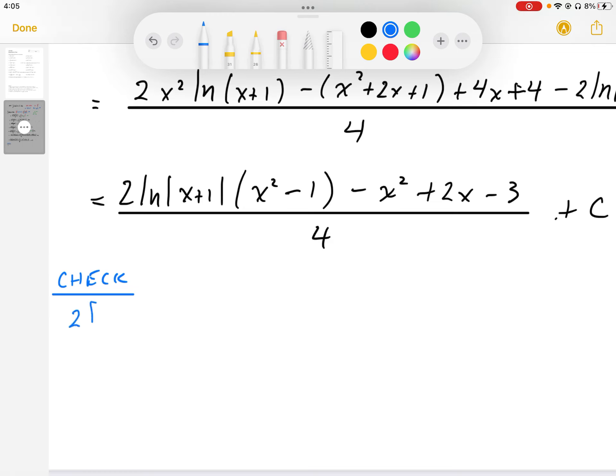I'm going to differentiate the log part first. So I get 1 over x plus 1 times x squared minus 1 plus log of x plus 1. And then the derivative of that is going to be 2x,